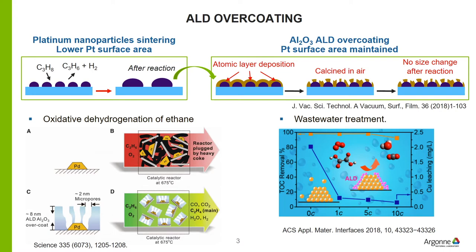The catalyst used in this process is a platinum-based catalyst, which has one major drawback. The platinum nanoparticles sinter after reaction, which lowers the Pt surface area. So what we did in this project is to do aluminum oxide ALD overcoating on those Pt nanoparticles to prevent them from sintering. According to the literature, before the propane dehydrogenation reaction, calcining those overcoated catalysts in air allows nanochannels to form on the ALD layer, which can provide access for the reactant propane and product propylene to get in and out of the catalyst.